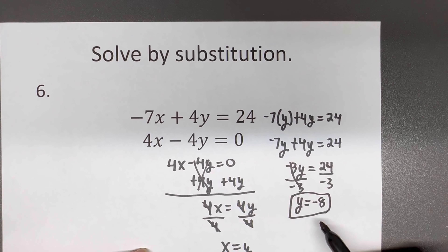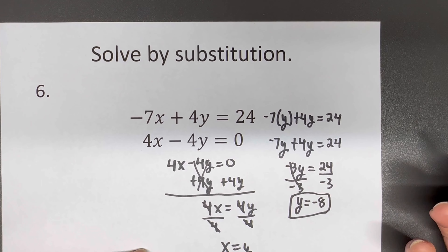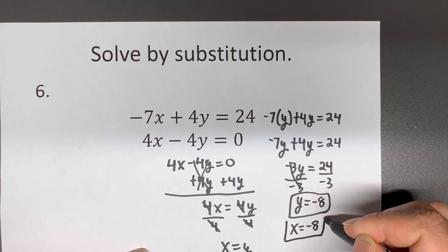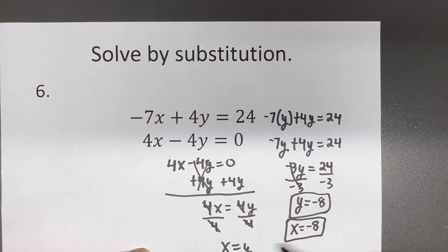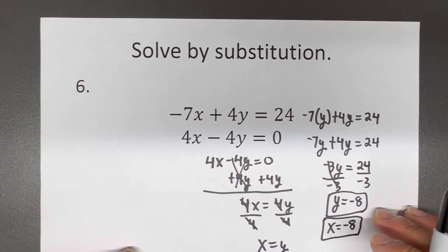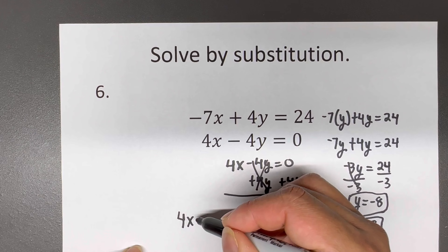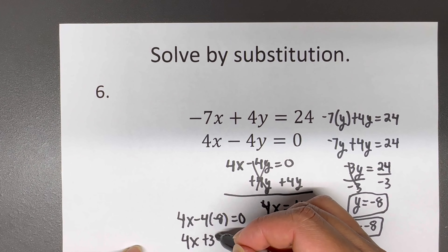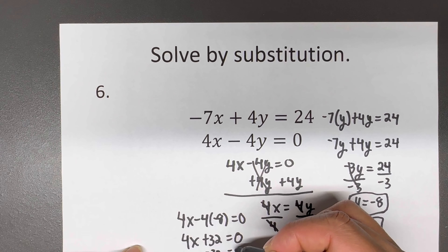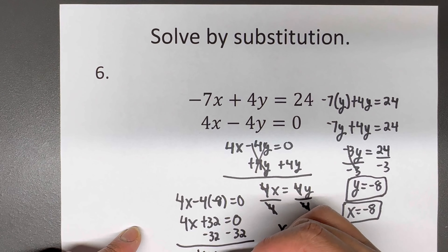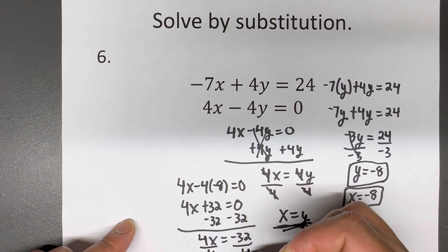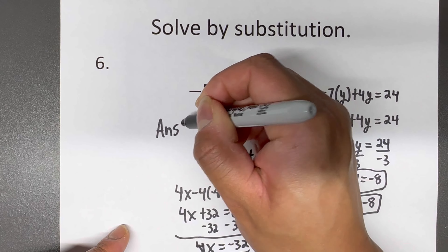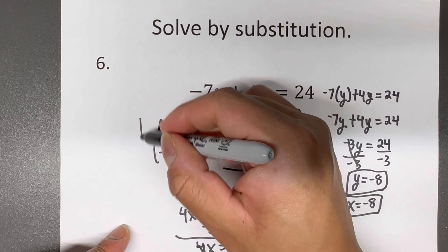Dividing both sides by negative three gives Y equals negative eight. Since we found that X equals Y, that means X equals negative eight as well. Let's verify by plugging back in: four X minus four times negative eight equals zero, giving four X plus 32 equals zero. Subtracting 32 and dividing by four confirms X equals negative eight. The solution is (-8, -8).